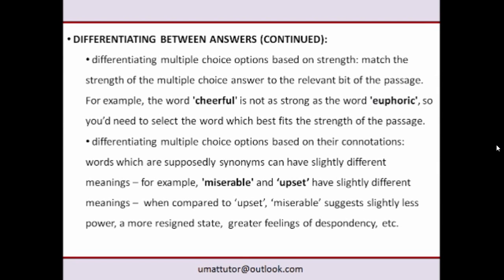Two of the best ways of differentiating between multiple choice options is by comparing their strength or their connotations. You work out the strength or connotations of the passage and find the answer which best matches that. For example, the word 'cheerful' is not as strong as 'euphoric' — so if those were your two options, you'd choose between them based on the strength conveyed in the passage.